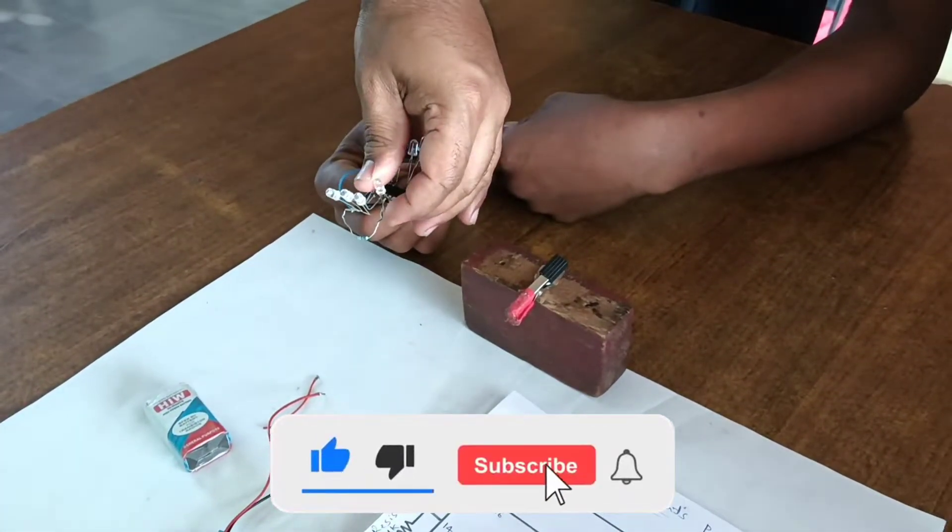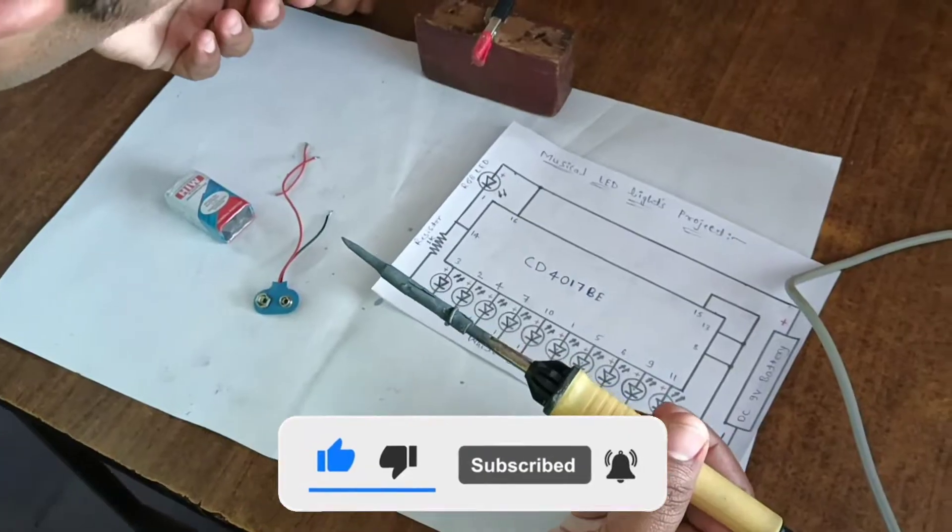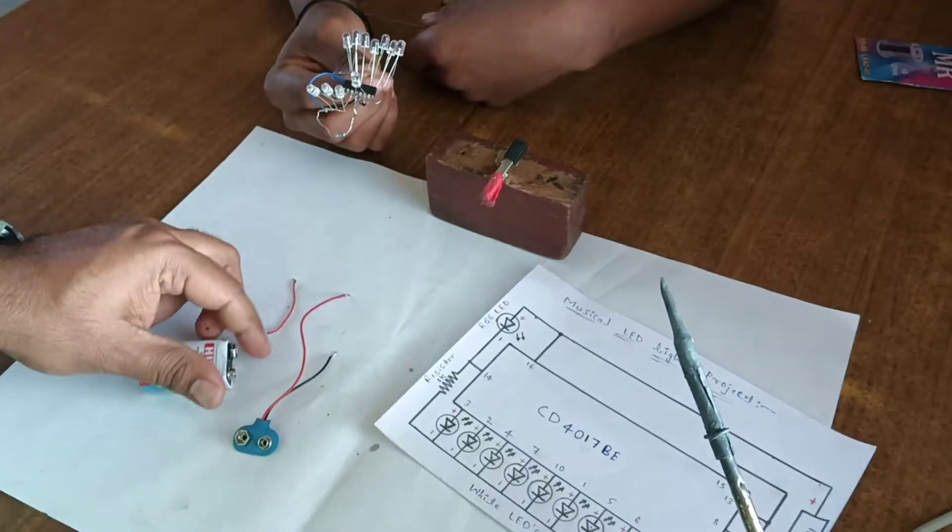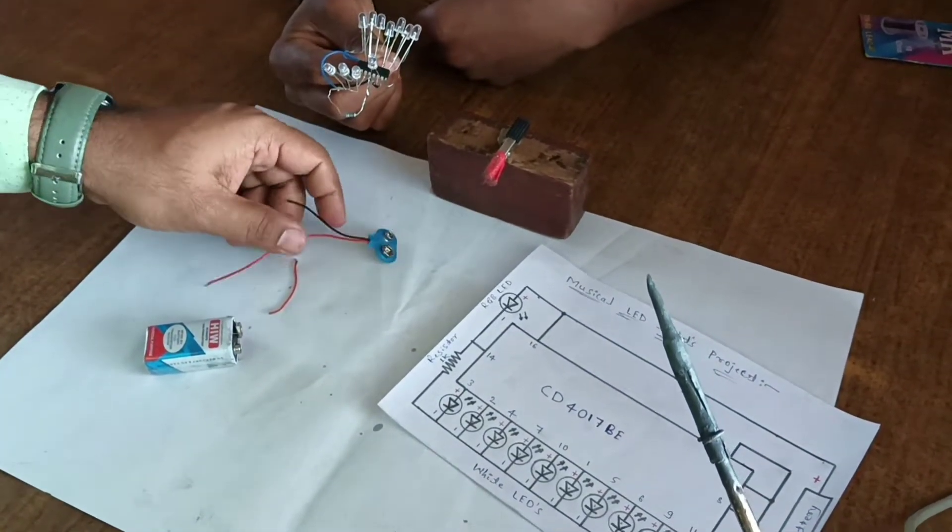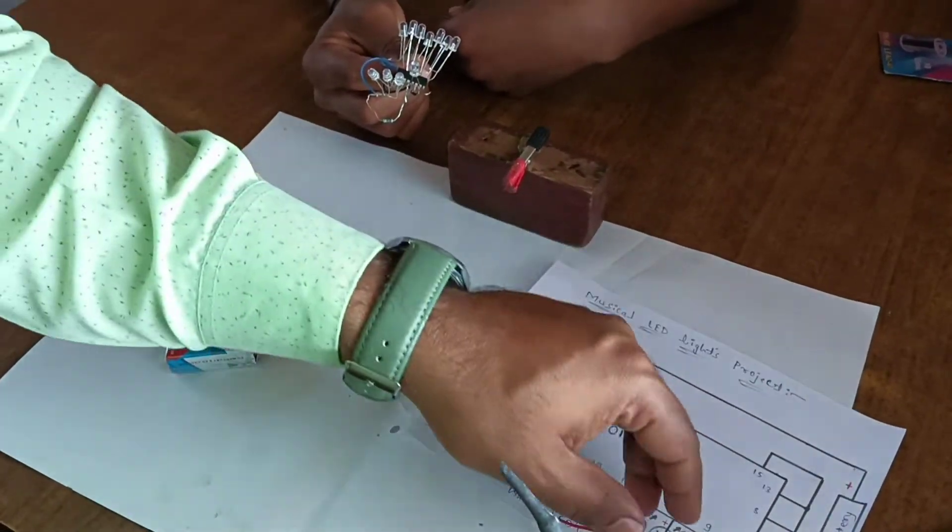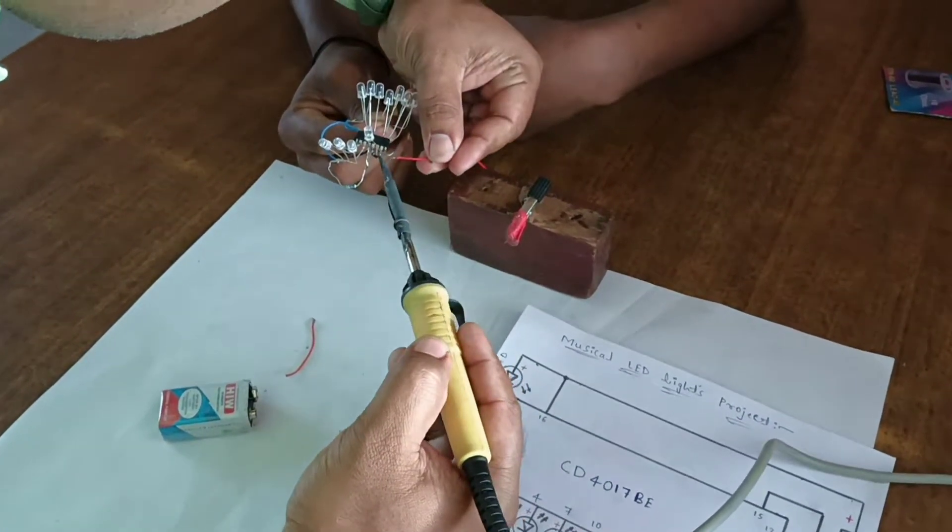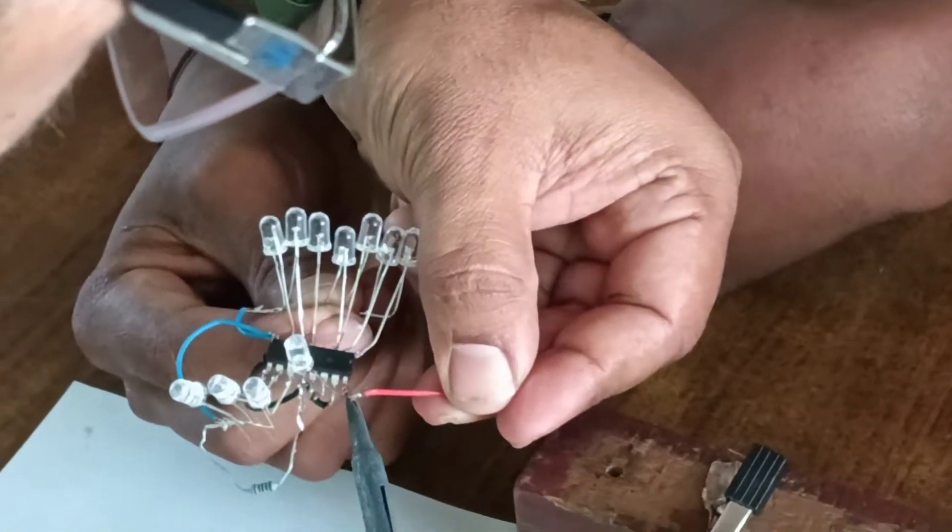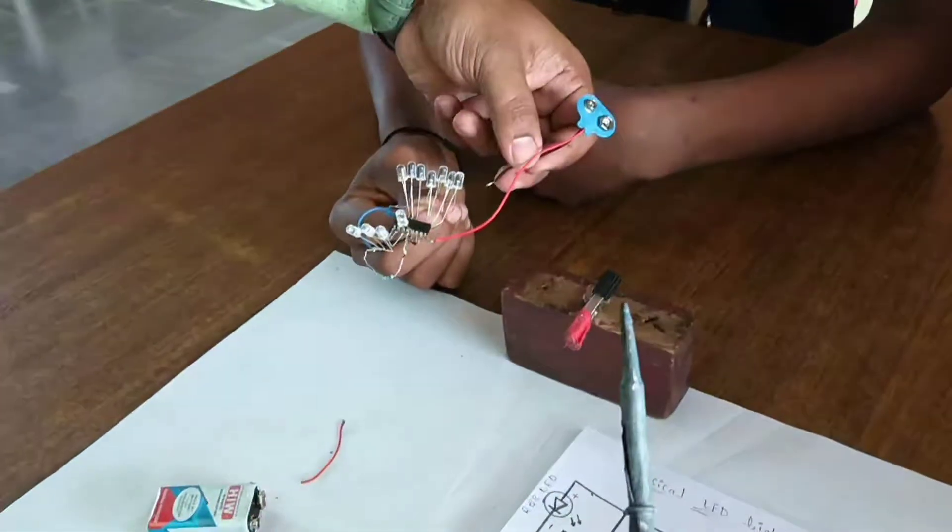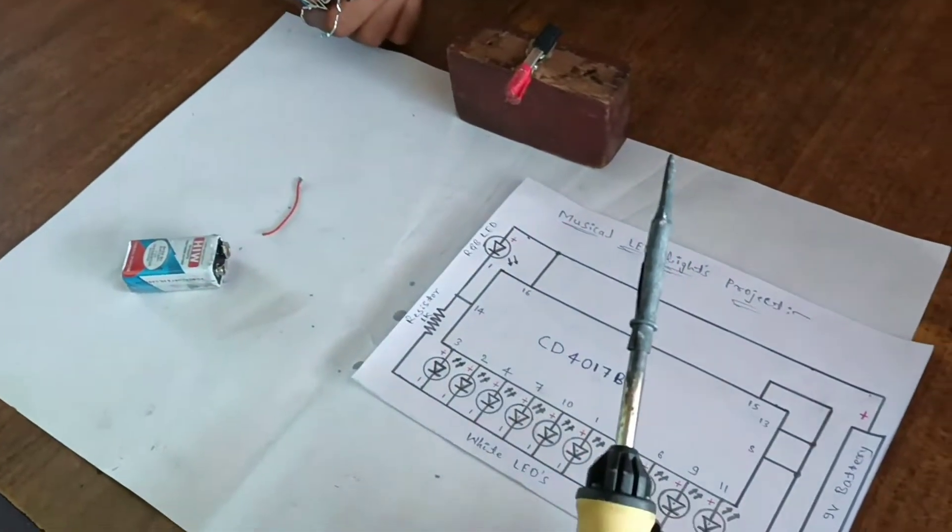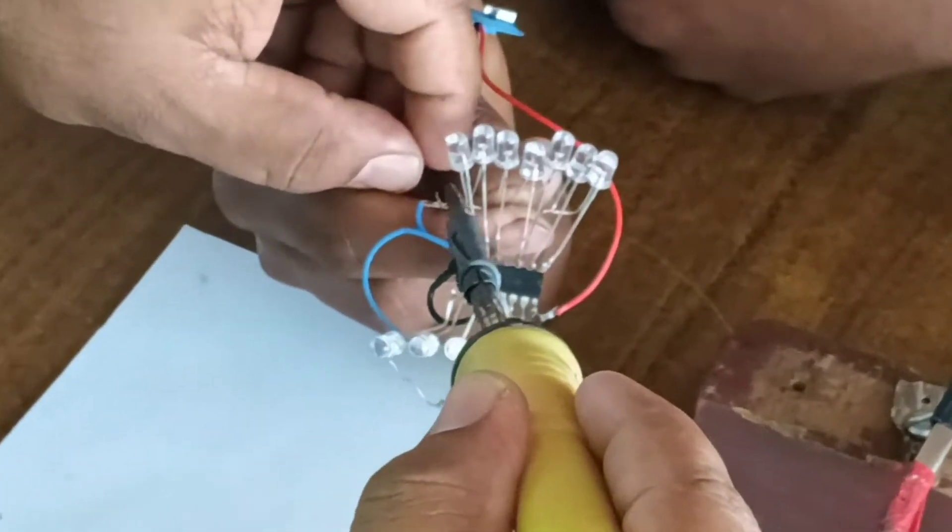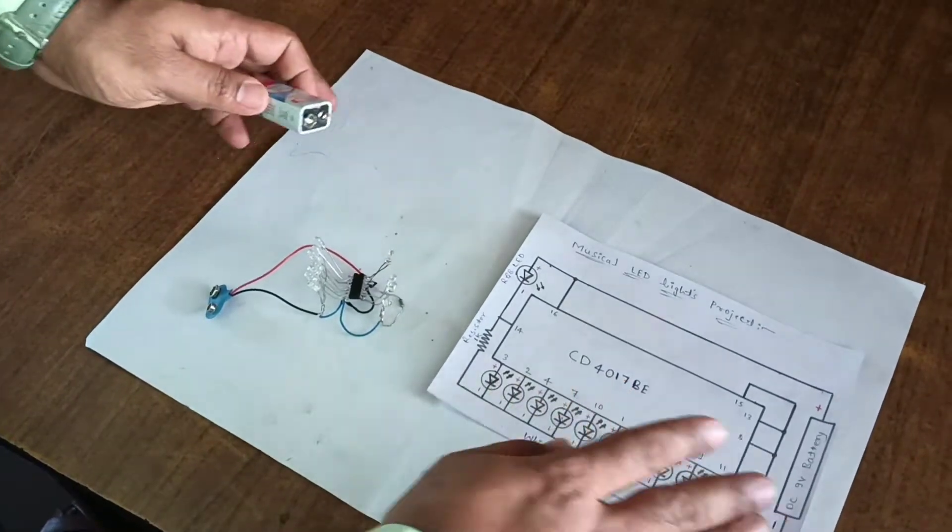Now the connection is over. Next is circuit by 9 volt battery, this is the battery cap. Positive of the battery is given to auxiliary positive at pin number 16.